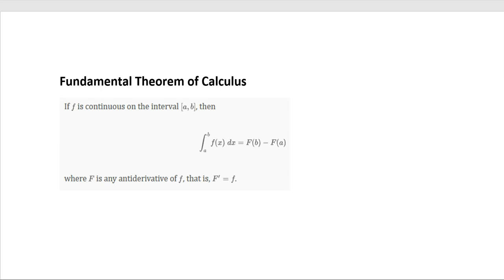It says if f is a continuous function on the closed interval a to b, then the integral from a to b of f(x) dx is F(b) minus F(a), where capital F is any antiderivative of f(x).